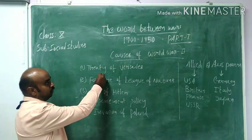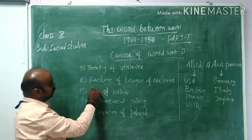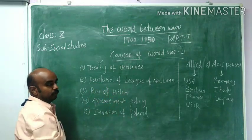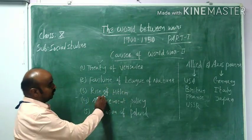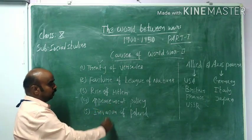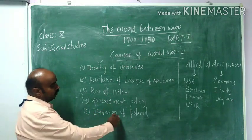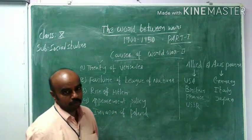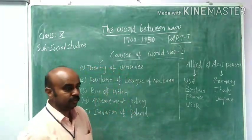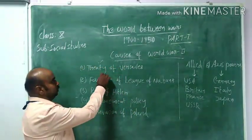The first cause for the outbreak of World War II is the Treaty of Versailles. The second one is the failure of the League of Nations. The third one is the rise of Hitler. The fourth one is the appeasement policy. And the fifth one is the invasion of Poland. Let us see what these major causes are.